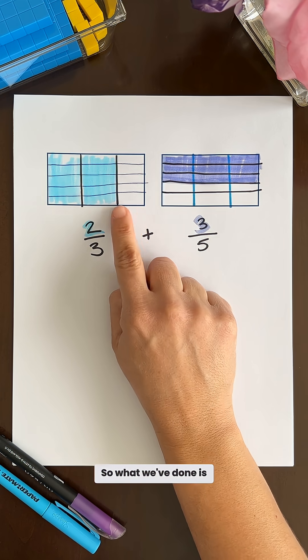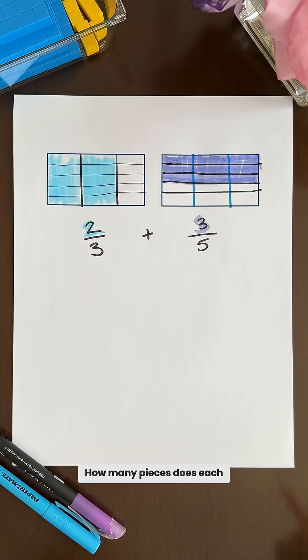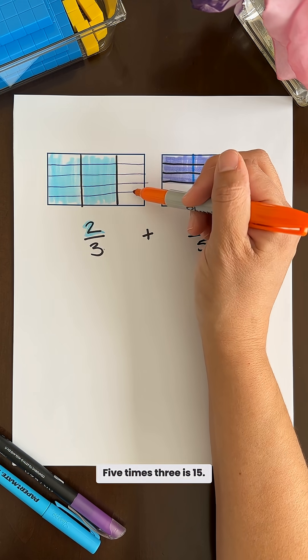So what we've done is we've taken each of these rectangles and broken them into equal size pieces. How many pieces does each rectangle have in total? 5 times 3 is 15.